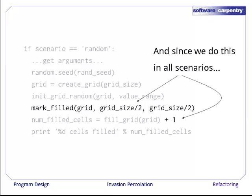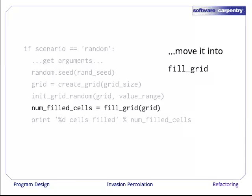And while we're here, let's clean up something that we first pointed out a couple of episodes ago. We are manually filling the center cell and then calling fillGrid to fill the remainder. That means we have to add one to the result returned by fillGrid. Since we do this in all of our scenarios, let's just move that code into fillGrid. So the fillGrid function now marks the center cell and fills until it reaches the boundary and returns the total number of cells filled.